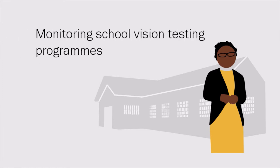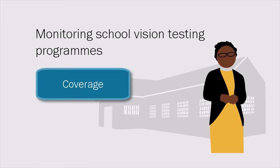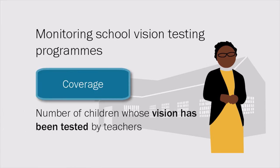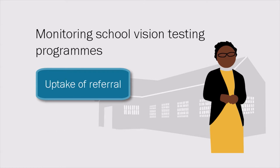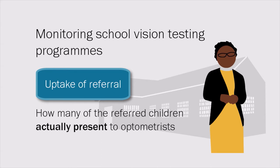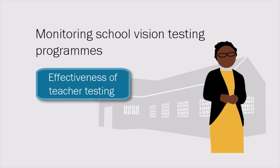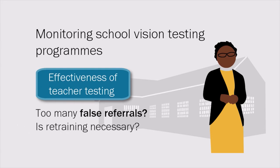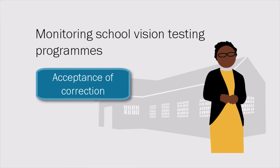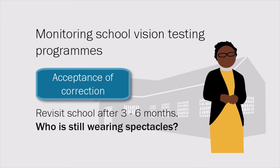Management should collect data to monitor school vision testing programs. Know the coverage: the number of children whose vision has been tested by teachers. Know the uptake of referral: how many referred children actually present to optometrists. Establish how effective the teachers' testing is — if there are too many false referrals, retraining may be necessary. Understand the acceptance of refractive correction, achieved by revisiting the school 3–6 months later and identifying which children are still using their spectacles.